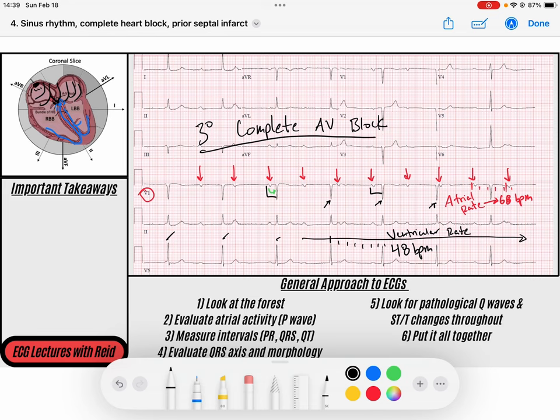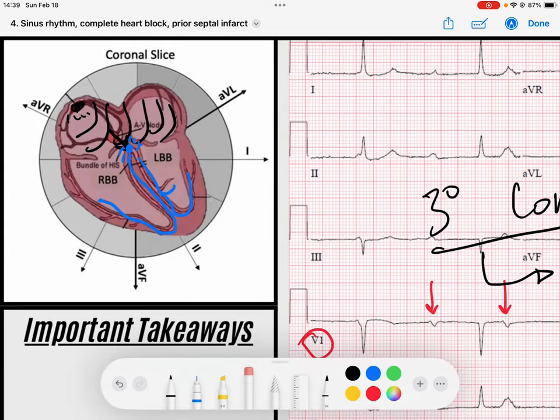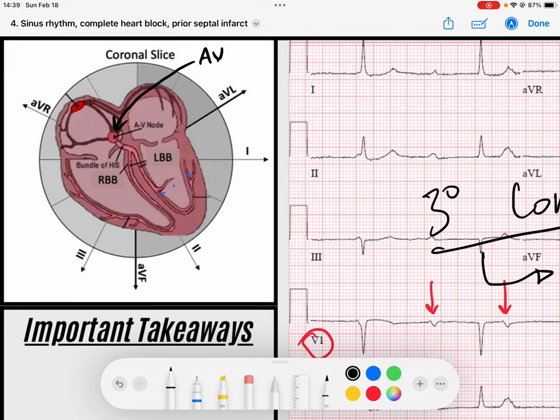And so, luckily, this is a third-degree complete AV block with a junctional escape rhythm. So this person's AV block, we said there are two structures at the AV junction. We said there are two structures at the AV junction. There is first the AV node itself, and then there is the His bundle. And so either of these, if they're completely diseased, can lead to a third-degree block.